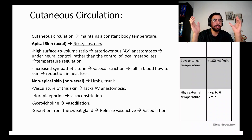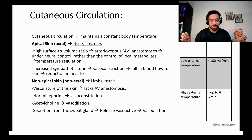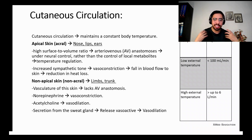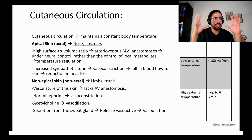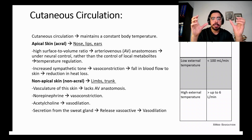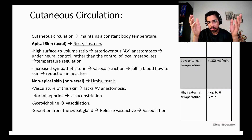The second topic is cutaneous circulation — the blood supply to our skin. This system acts like an air conditioner inside the body by controlling body temperature. In normal conditions, when the outside temperature equals inside body temperature, blood flow to the skin is about 100 to 300 milliliters per minute.